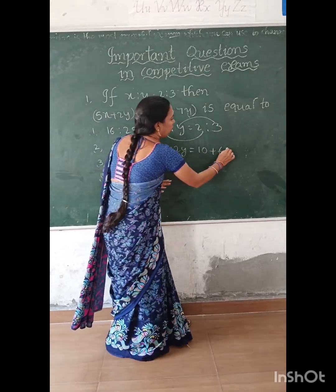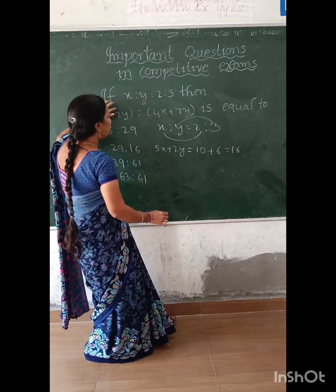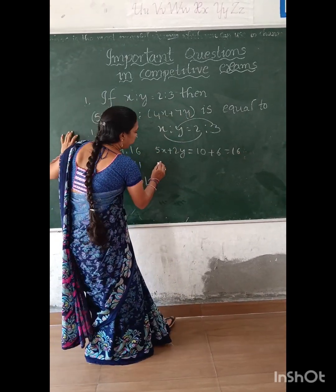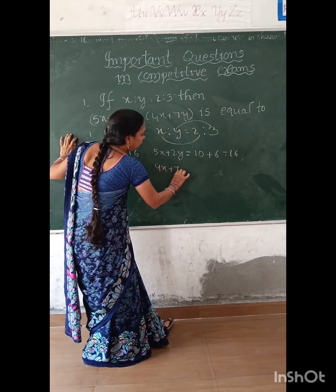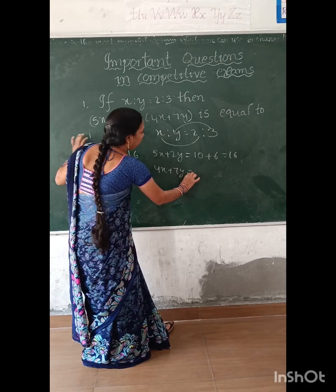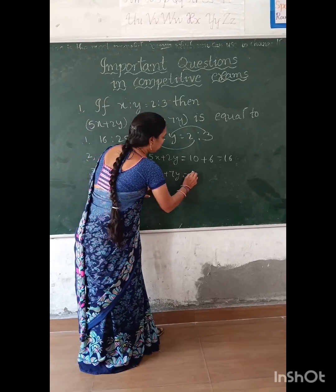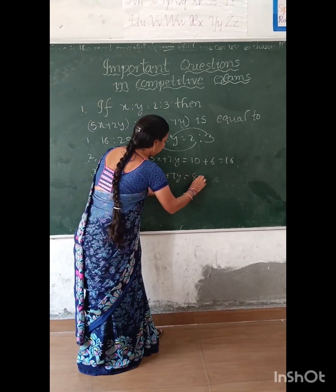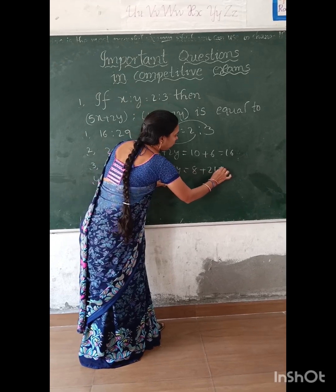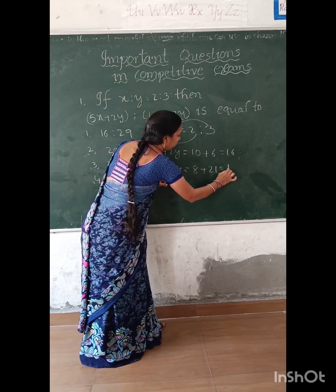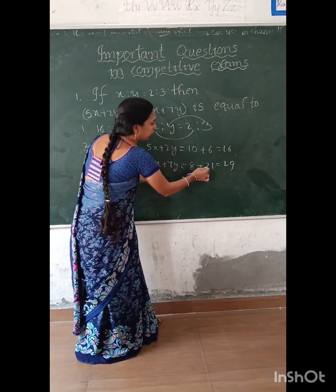Okay, now the next equation. This is 4x plus 7y. So x here is 2, y here is 3 — substitute: 4 times 2 is 8, plus 7 times 3 is 21. So the total is 29.